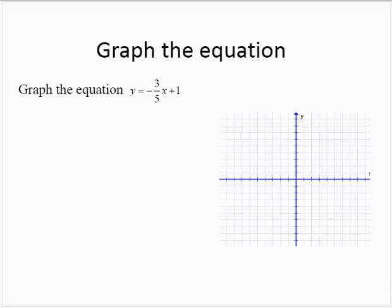Graph the equation y equals negative 3/5x plus 1. Similarly, I'll set up a table of values. I like to choose multiples of the denominator and 0, so I'd choose 0, negative 5, and positive 5.